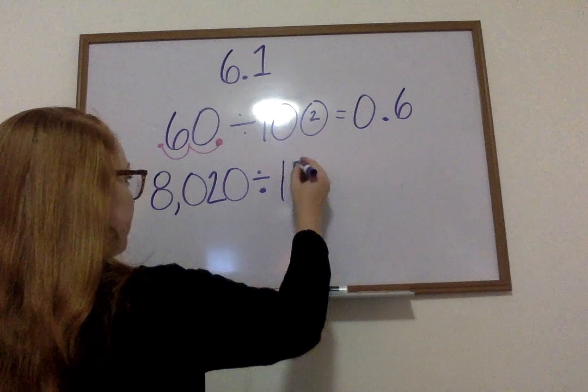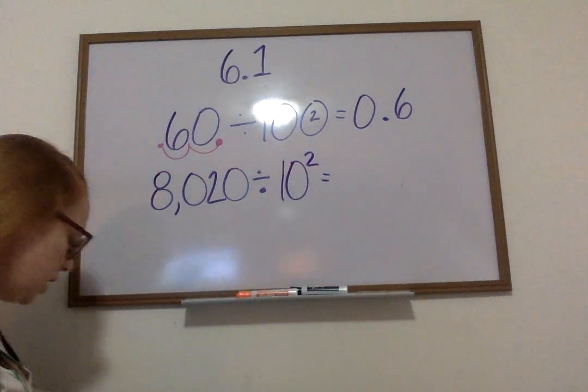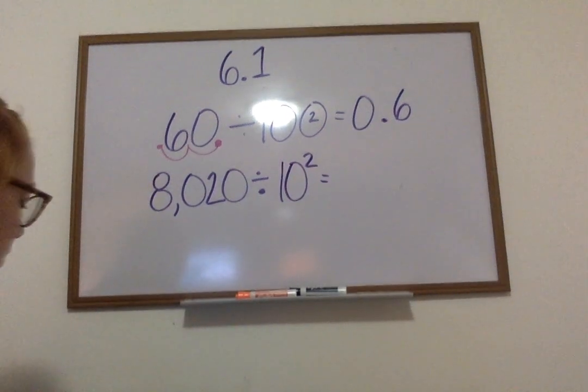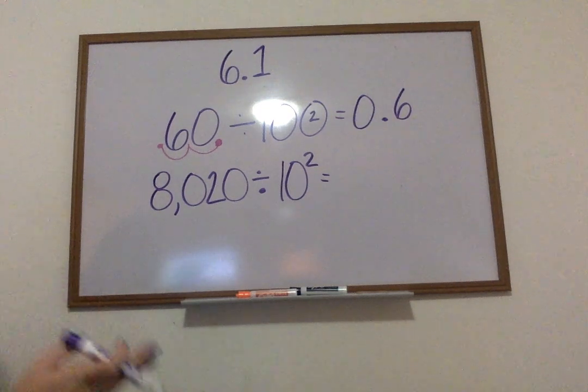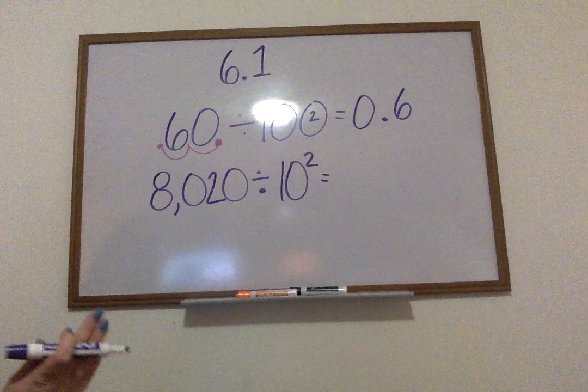8020 divided by 10 to the second power. So, first thing I see is, okay, we're dividing by a number that's a 10. It's also 10 to the power of two. And I know that my number is going to get smaller. My decimal is going to move to the left.